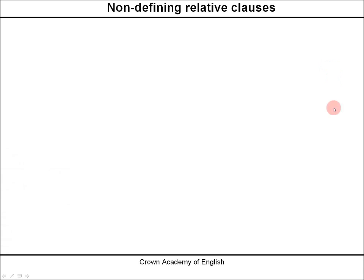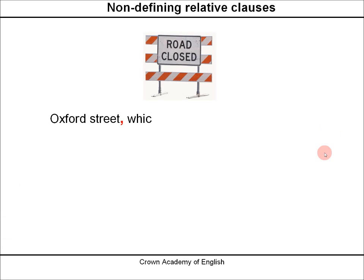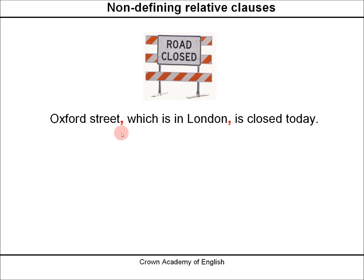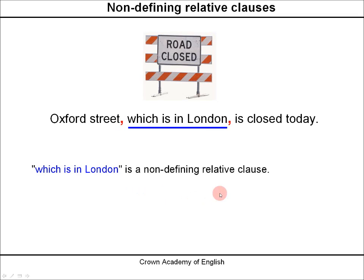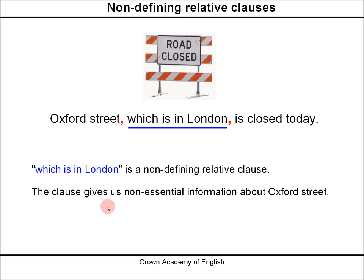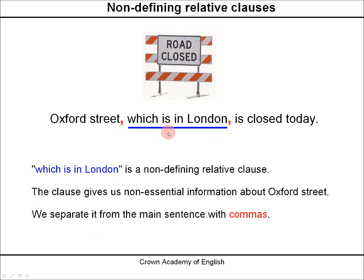Non-defining relative clauses. 'Oxford Street, which is in London, is closed today.' Notice the pause after 'street' and after 'London.' 'Which is in London' is a non-defining relative clause — it gives us non-essential information about Oxford Street. The main sentence is 'Oxford Street is closed today.' Therefore, we separate the clause from the main sentence with commas.